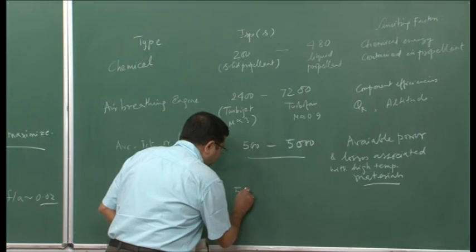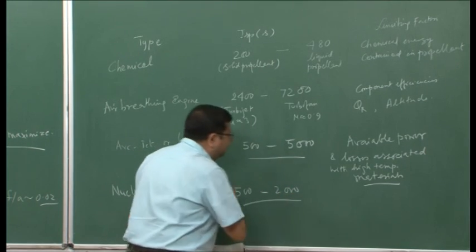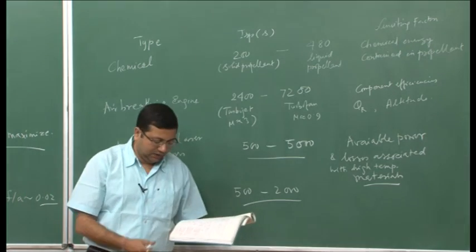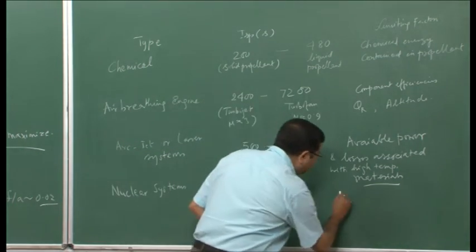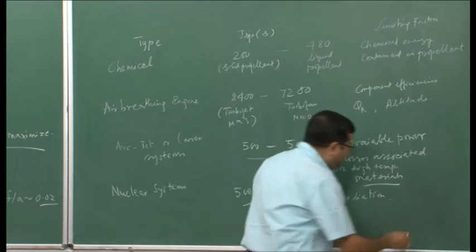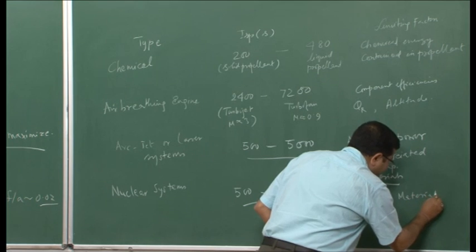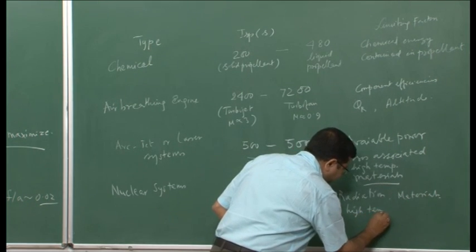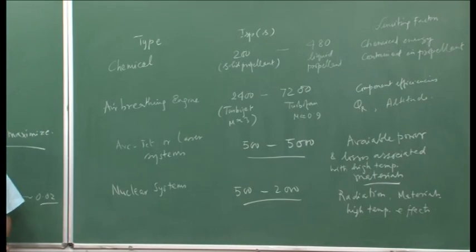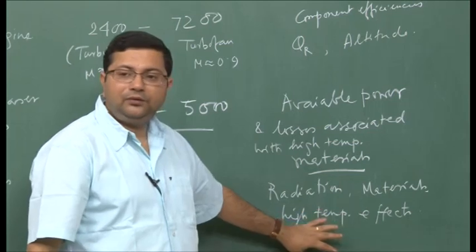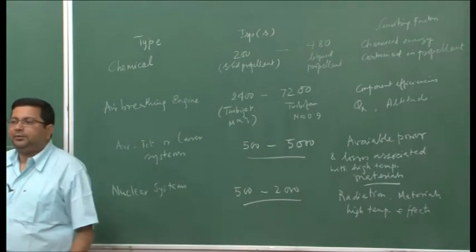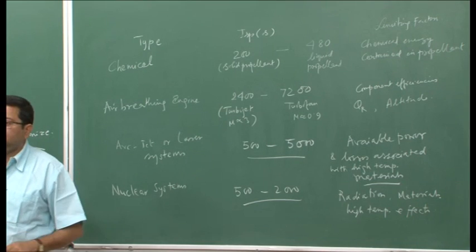Nuclear systems have relatively high specific impulse, but not as high as arc jet, laser, or electric propulsion systems. They range between 500 to 2000 seconds. The limiting factors for nuclear systems are primarily radiation, materials due to the very high temperatures expected, and those high-temperature effects. This also limits the application of these systems. This is a summary of all different types of rocket or space propulsion systems.